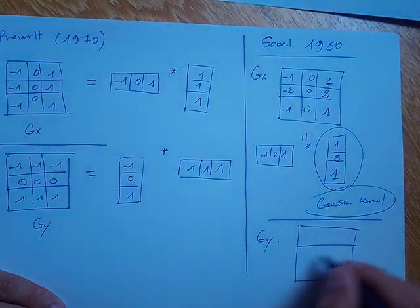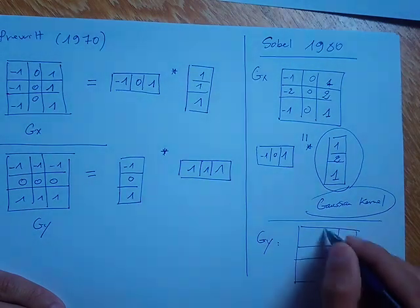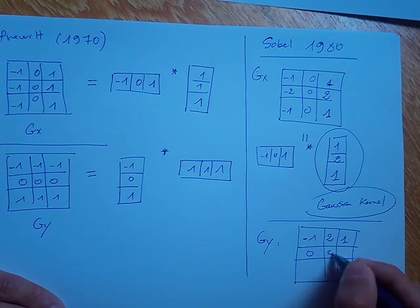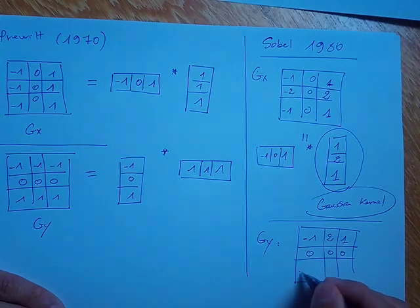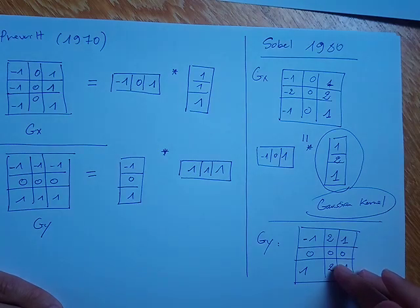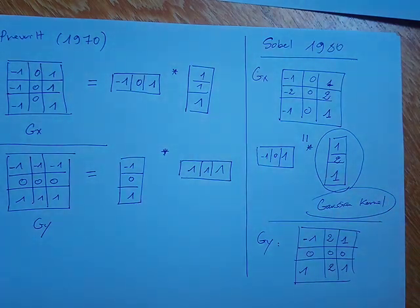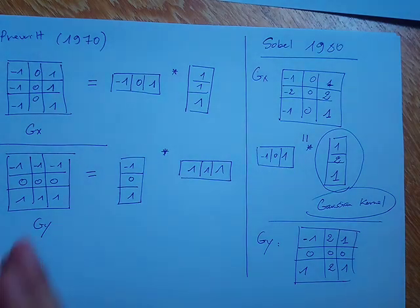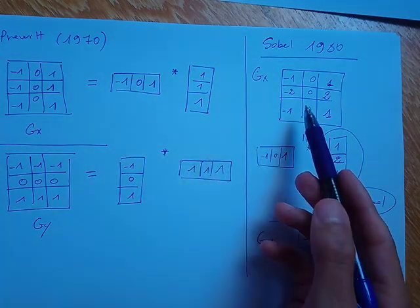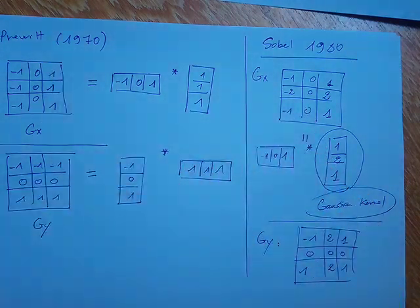The Sobel gy kernel looks like: minus 1, minus 2, minus 1 in the top row, 0, 0, 0 in the middle, and 1, 2, 1 in the bottom row. It can be decomposed in the same way as already described. Sobel is usually better than Prewitt, but the disadvantage of Sobel is that it requires more computation than the Prewitt kernel.